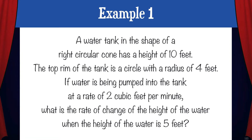A water tank in the shape of a right circular cone has a height of 10 feet. The top rim of the tank is a circle with a radius of 4 feet. If water is being pumped into the tank at a rate of 2 cubic feet per minute, what is the rate of change of the height of the water when the height of the water is 5 feet? Let's break this down and outline the givens and determine what it is we're looking for.